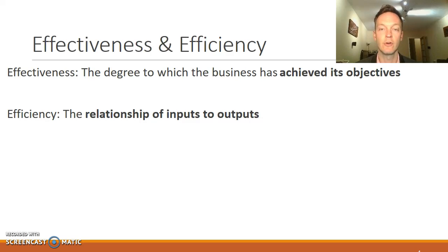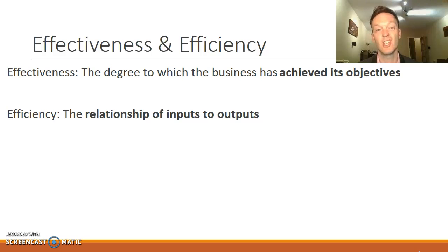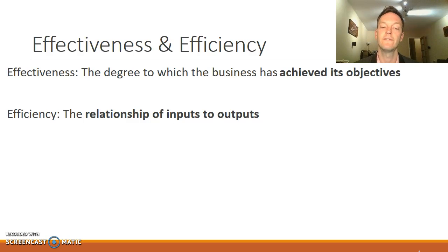Just as a reminder on effectiveness and efficiency: effectiveness refers to the degree to which the business has achieved its objectives — sales, profit, market share, and so on — whereas efficiency is the relationship of inputs to outputs.